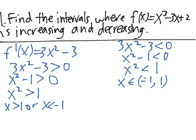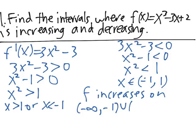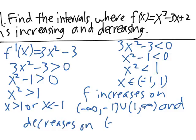So f increases on the interval (-∞, -1) union with the interval (1, ∞), and decreases on the interval (-1, 1). Notice that this information also tells us that -1 is a local maximum and 1 is a local minimum of this function.